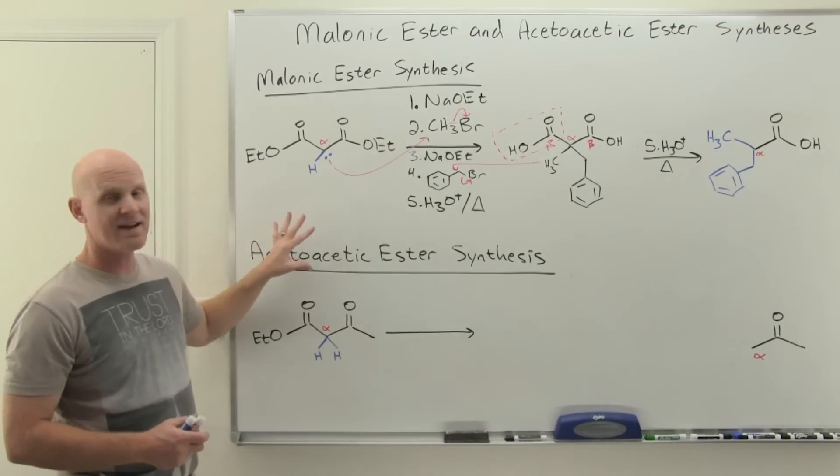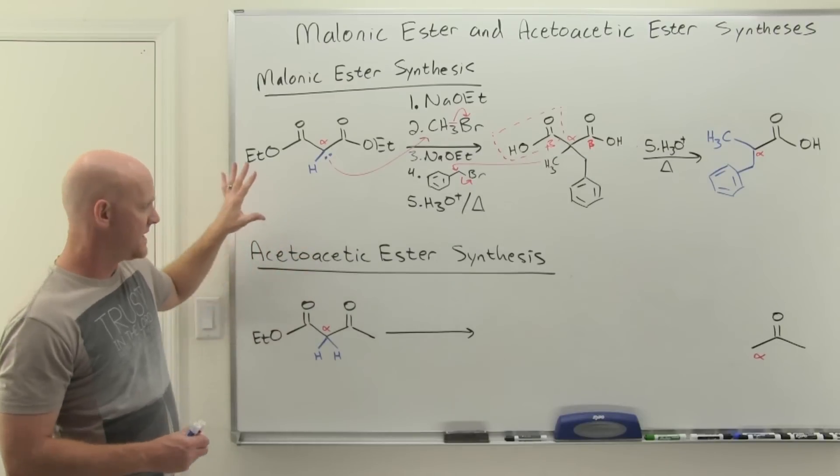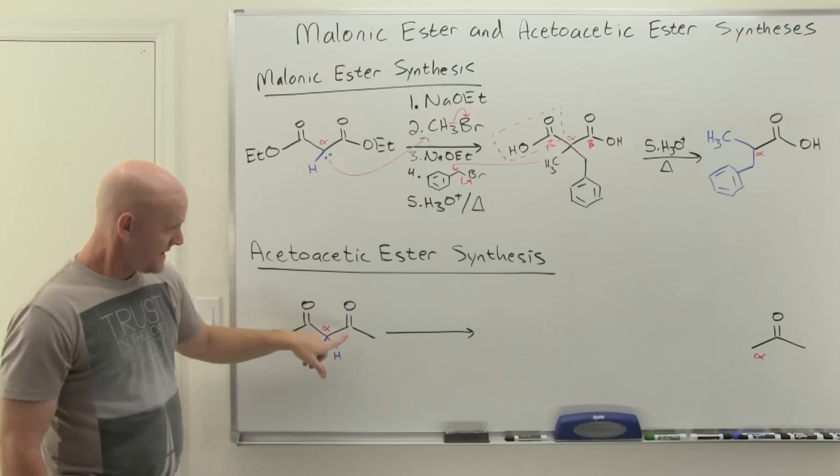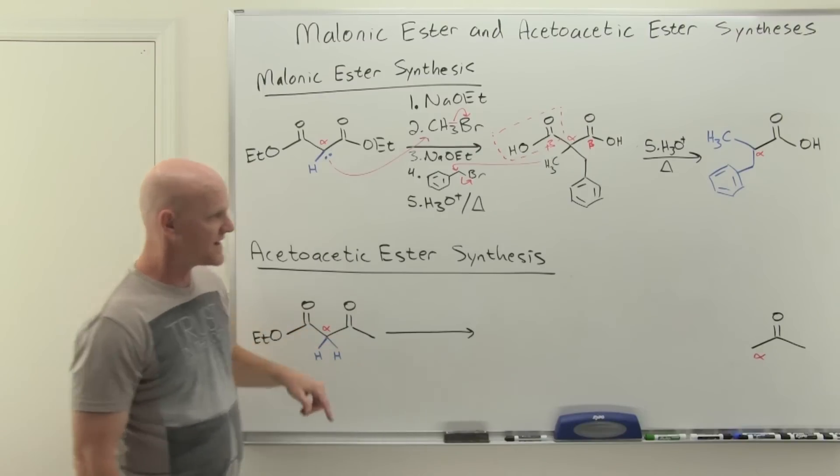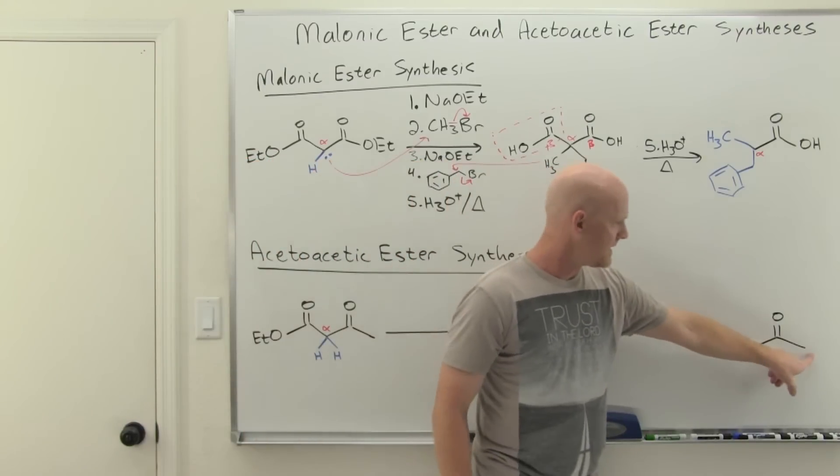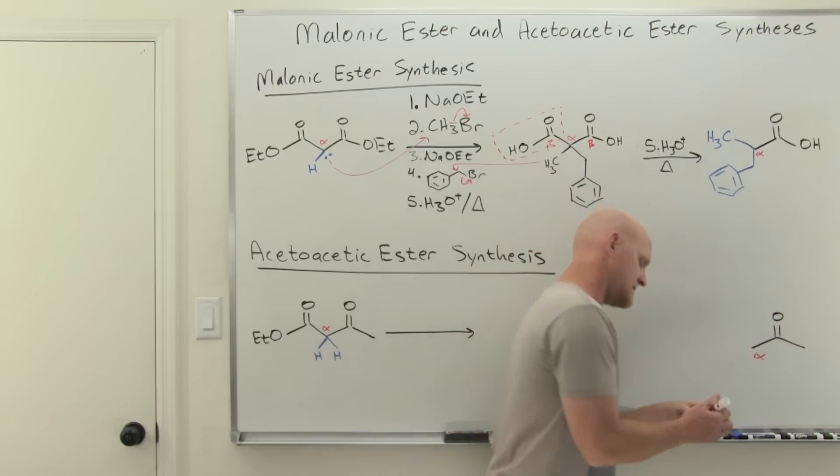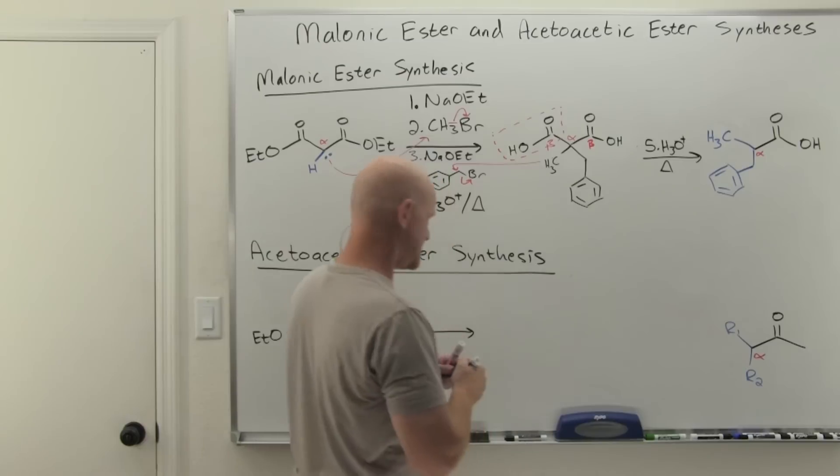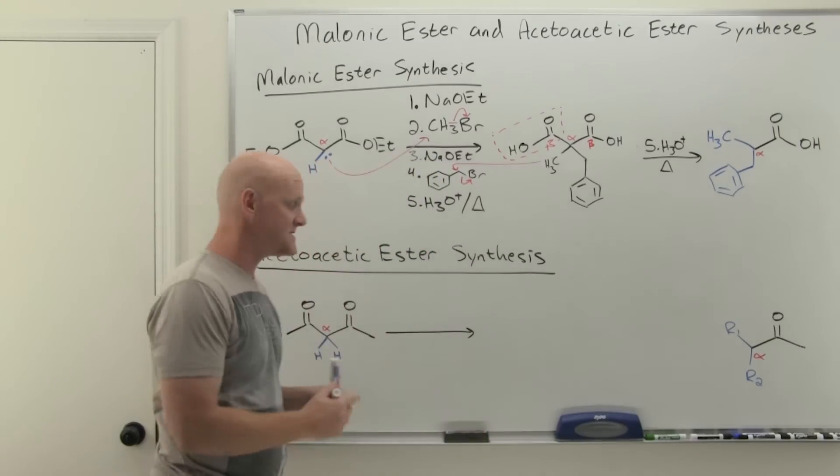Now it turns out the acetoacetic ester synthesis is exactly analogous, except that you've got this ketone on the other side. And so instead of forming a carboxylic acid, you're going to form this methyl ketone always. And the key is on the alpha carbon on the other side, you have a chance of either having one or again, two alkyl groups attached, but it's actually the exact same sequence of steps.